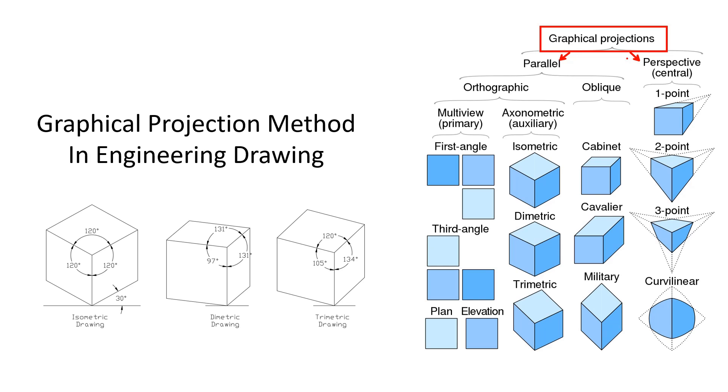Within the Parallel Projection method, there are two main categories: Orthographic and Oblique Projections. Under Orthographic Projection, we further explore multiple views such as the first angle and third angle projection methods.